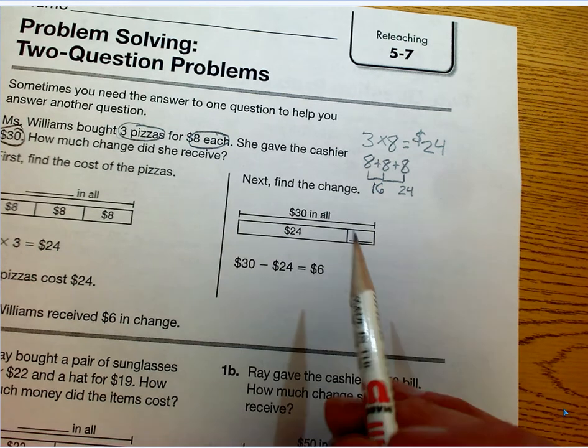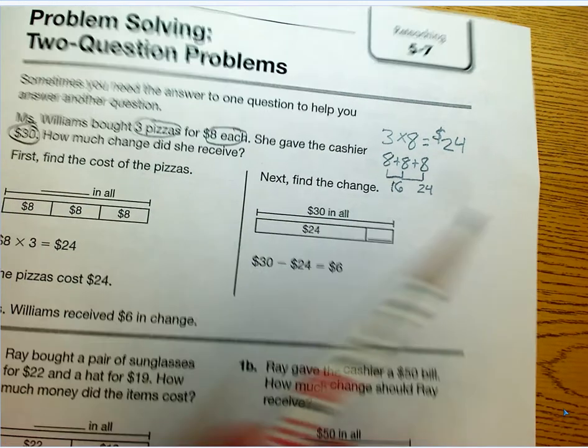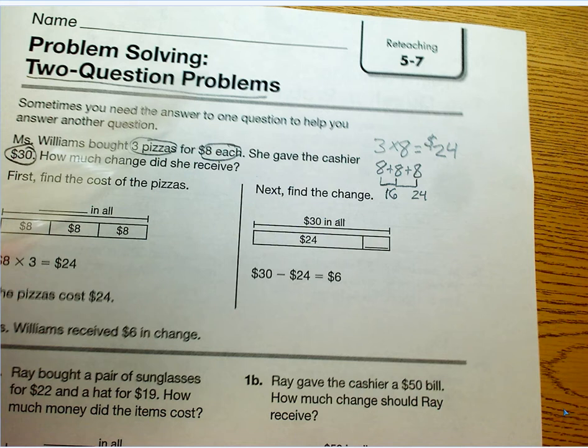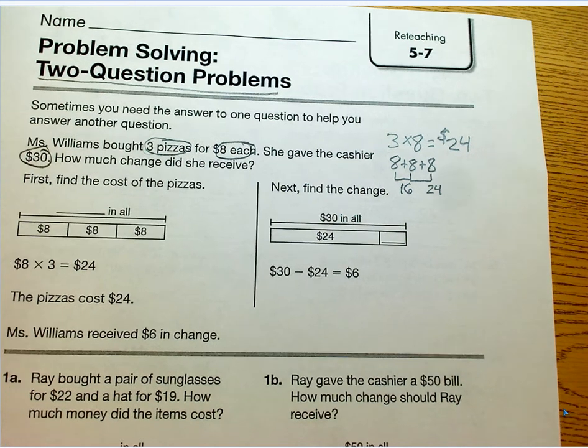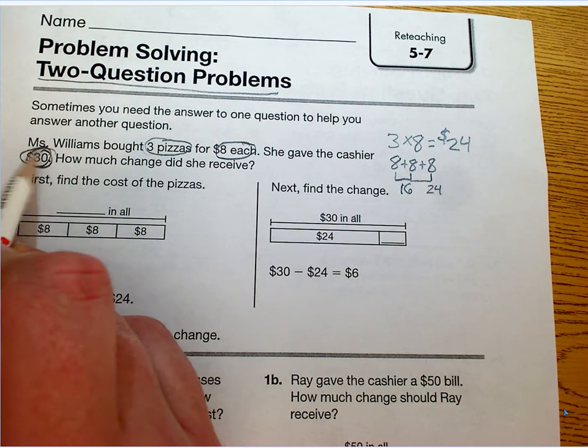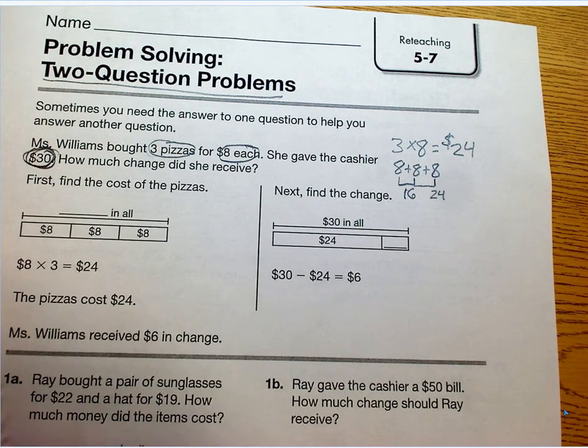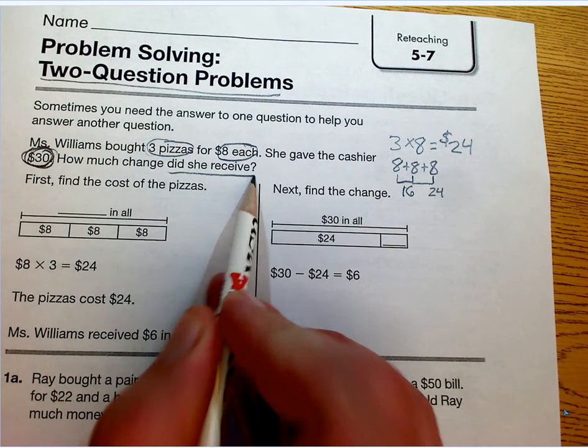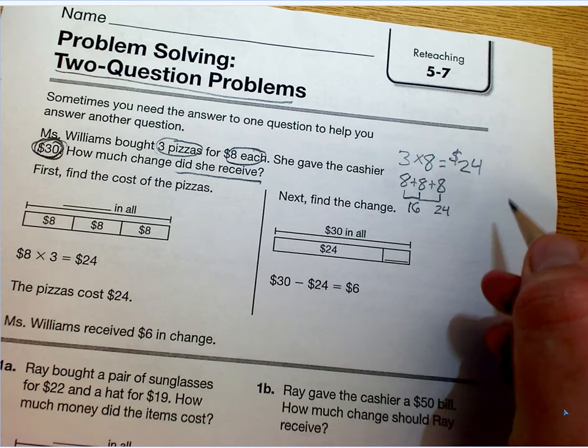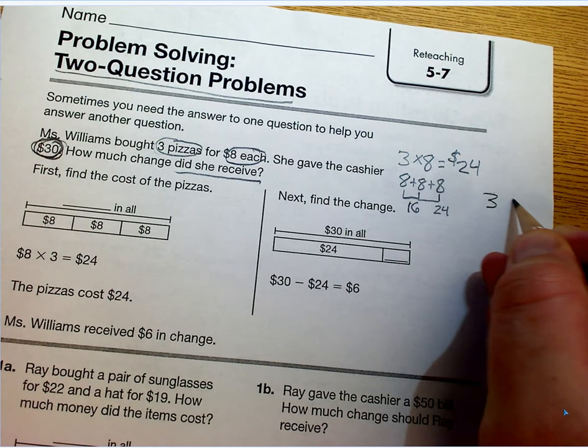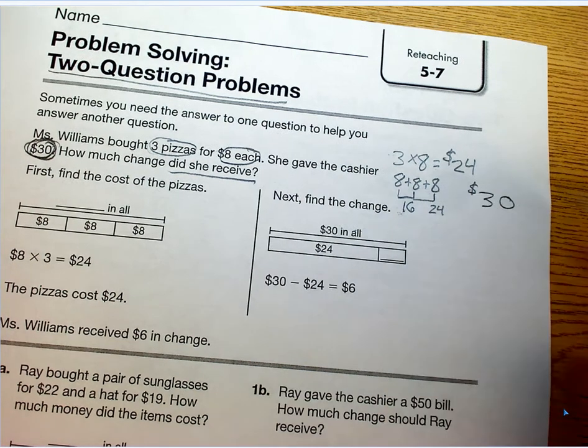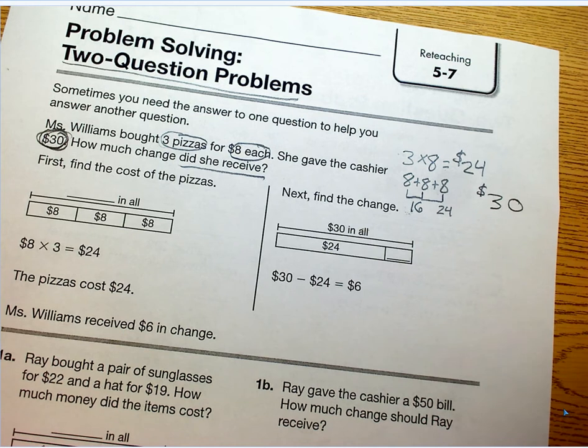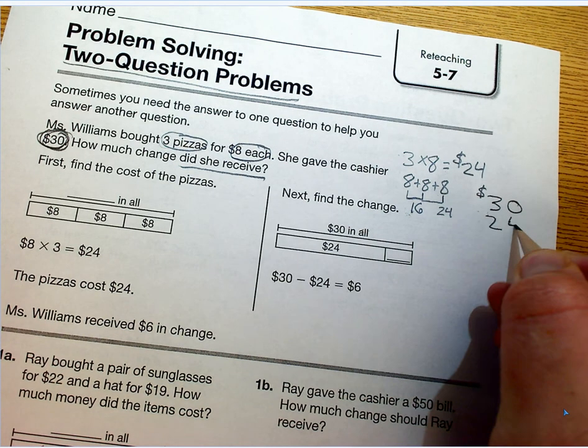A lot of people are going to be content with that first step, but this is a two-question problem, a two-fer, as we call it in here. So Mrs. Williams gave the cashier thirty dollars. So we need to see how much change did she receive. So we're going to take that thirty dollars, and we're going to subtract it, subtract twenty-four dollars.